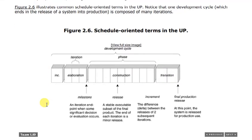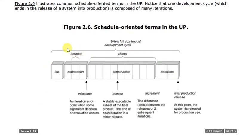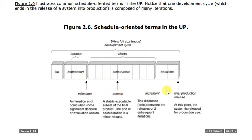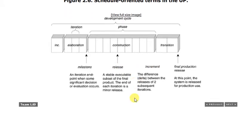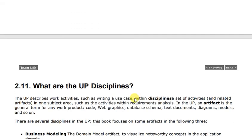We have a pictorial representation showing that in every development cycle we have Inception, Elaboration, Construction, and Transition — these four phases. In every phase, we are told about milestones and what increments are released.